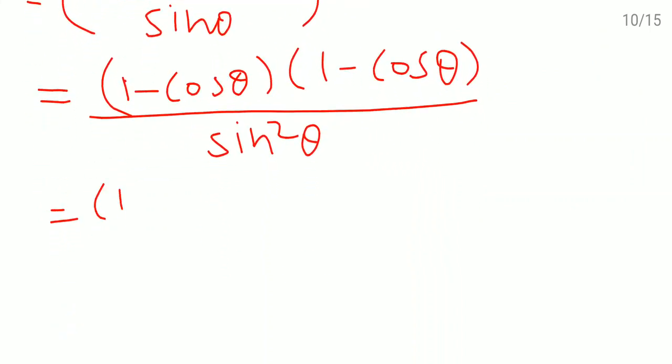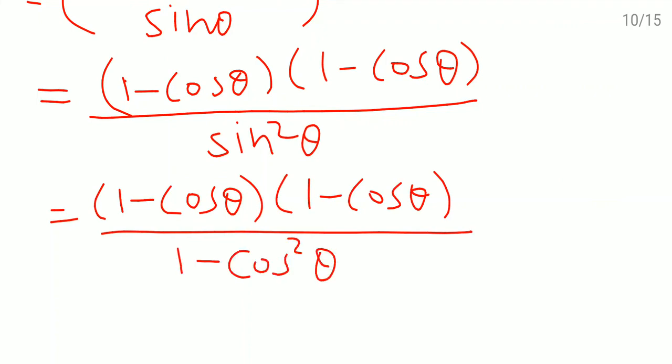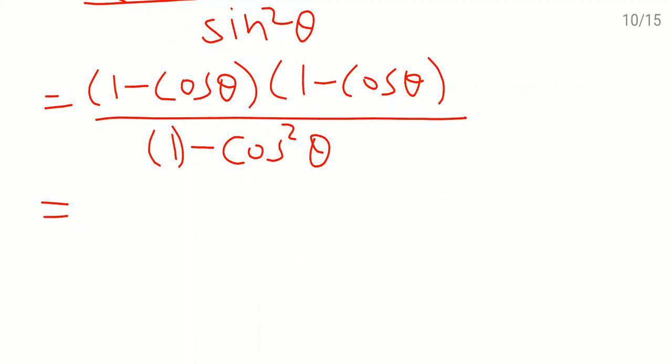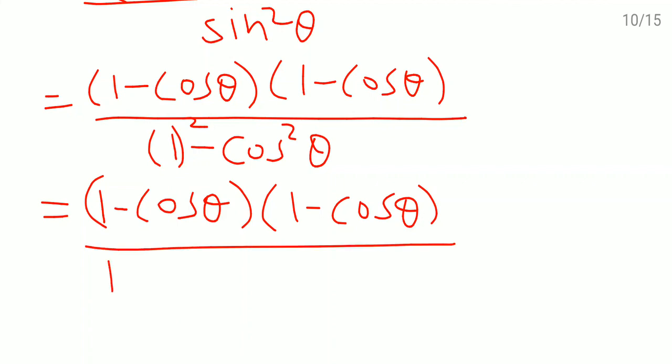See here numerator as it is 1 minus cos theta and 1 minus cos theta as it is. So here 1 minus cos square theta according to the identity. Now if you will observe denominator, see if I write down 1 square still it will not differ. So a square minus b square identity I can apply here. Right. At the denominator numerator as it is 1 minus cos theta and here also 1 minus cos theta. At the denominator 1 minus cos theta and 1 plus cos theta. Cancel the same brackets here. Now what is left 1 minus cos theta divided by 1 plus cos theta.